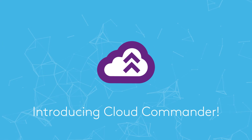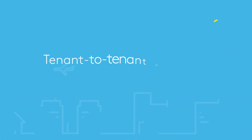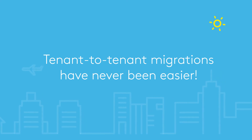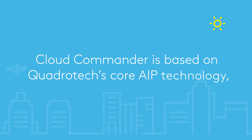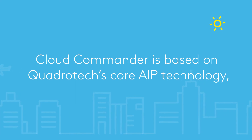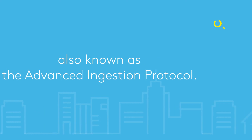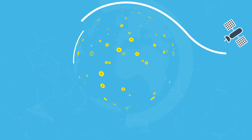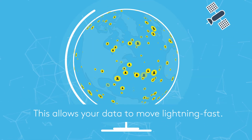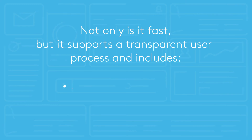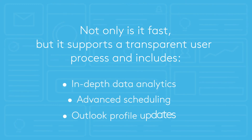Introducing Cloud Commander. Tenant to tenant migrations have never been easier. Cloud Commander is based on Quadratec's core AIP technology, also known as the Advanced Ingestion Protocol. This allows your data to move lightning fast. Not only is it fast, but it supports a transparent user process and includes in-depth data analytics, advanced scheduling, and Outlook profile updates.